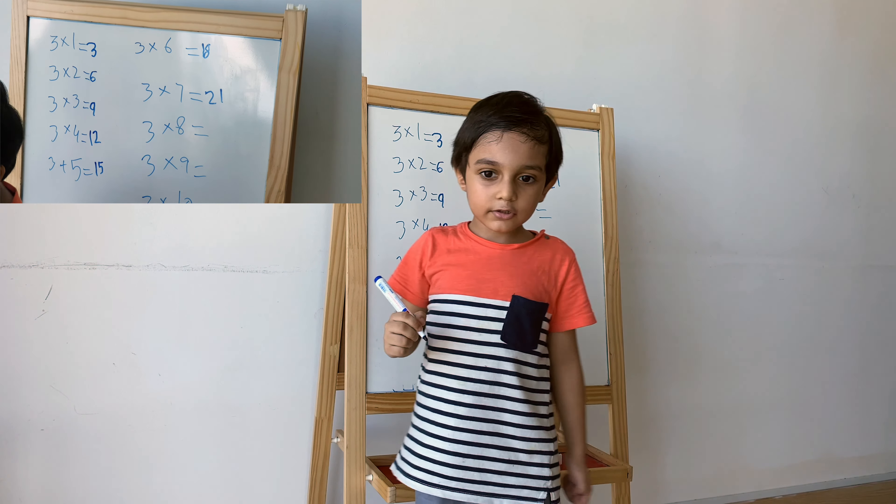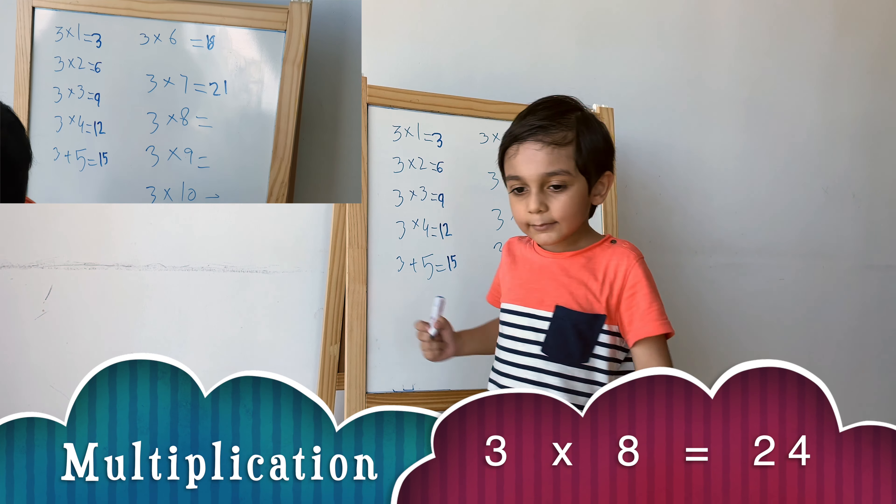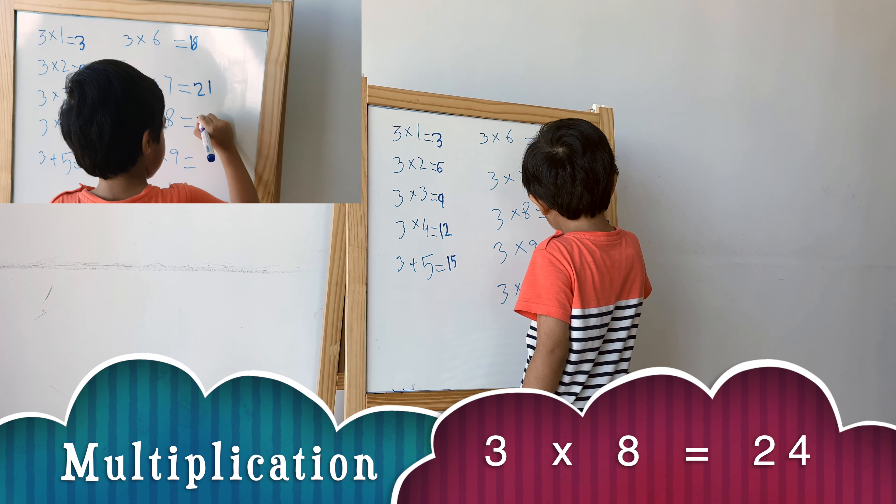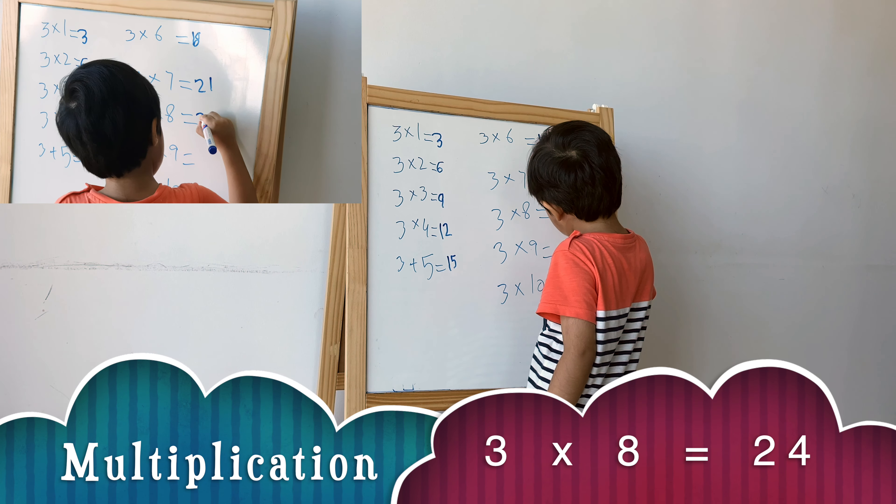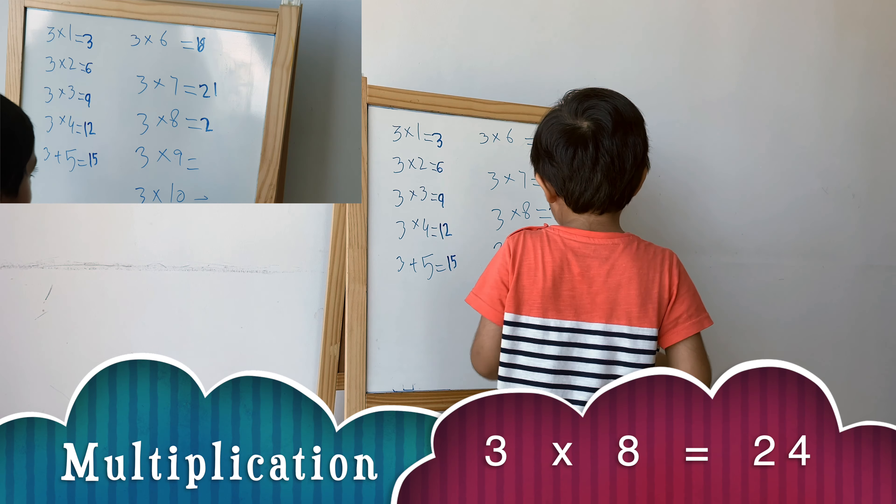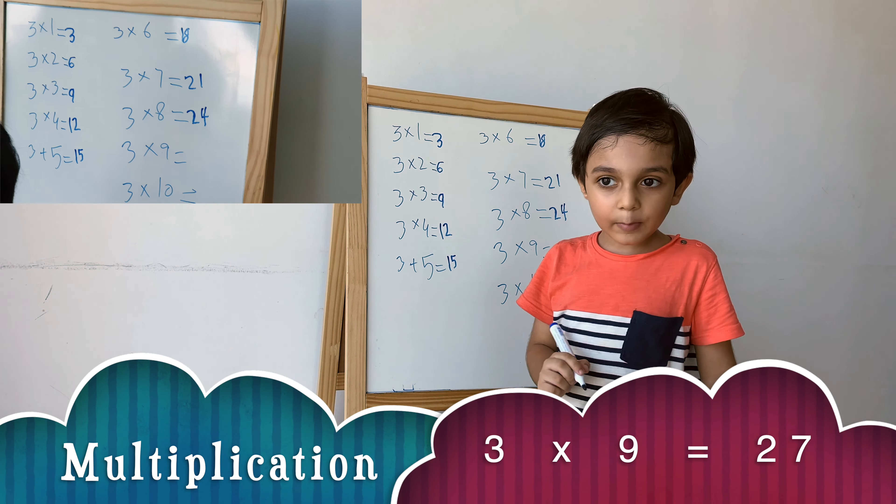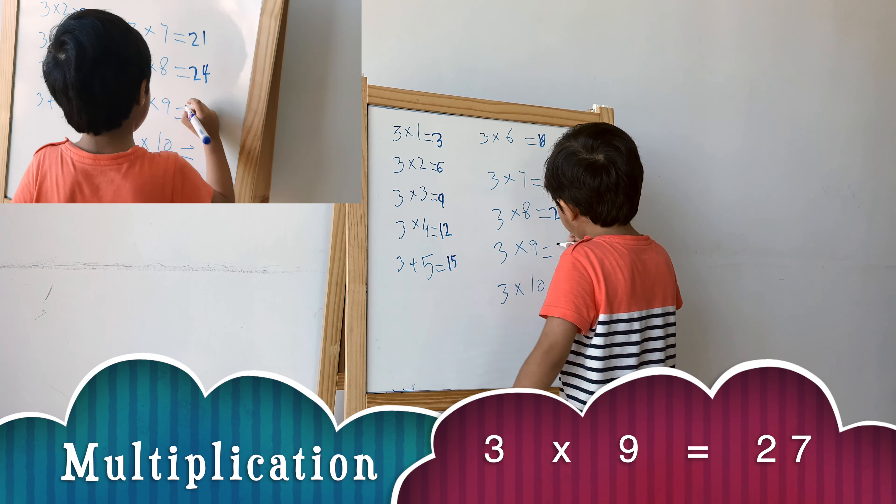And 3 multiplied by 8 equals 24. And 3 multiplied by 9 equals 27.